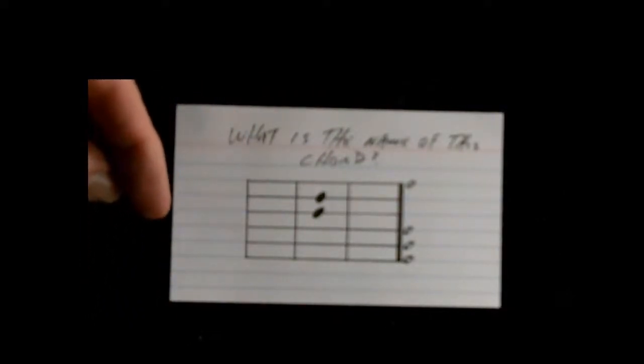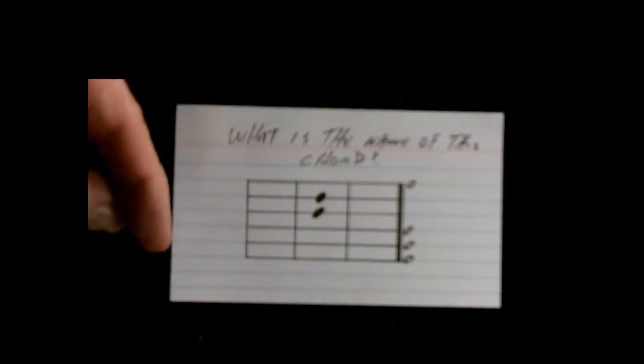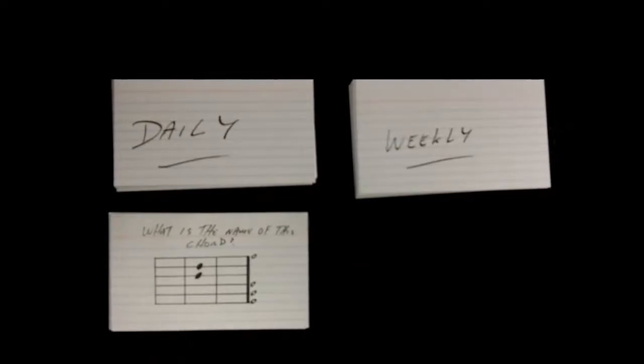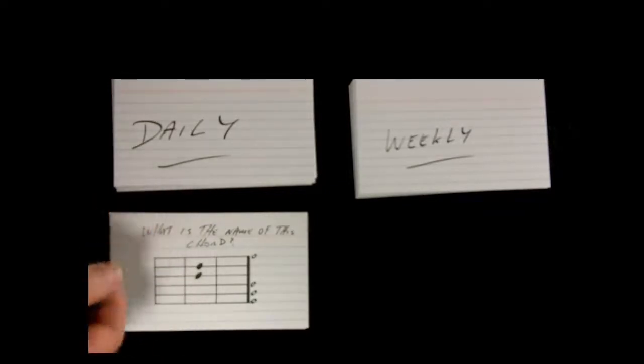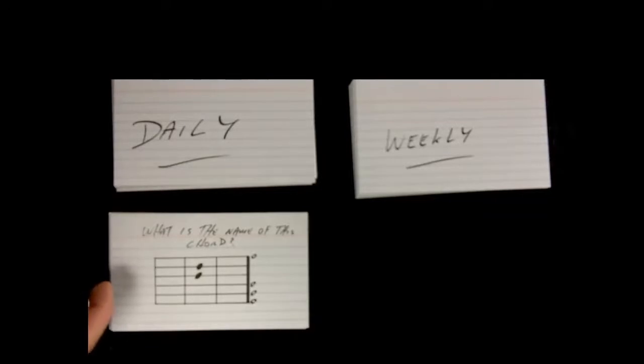What I'm wanting to do here is associate the chord shape with the chord name. Here's another example. On this card I've written 'What is the name of the notes in a D major chord?' And on the other side of the card I have the answer: D, F sharp and A. Once you've created your cards with information you want to remember about guitar playing or music, you place them in a daily pile — cards we're going to look at each day and ask ourselves the questions on these cards.